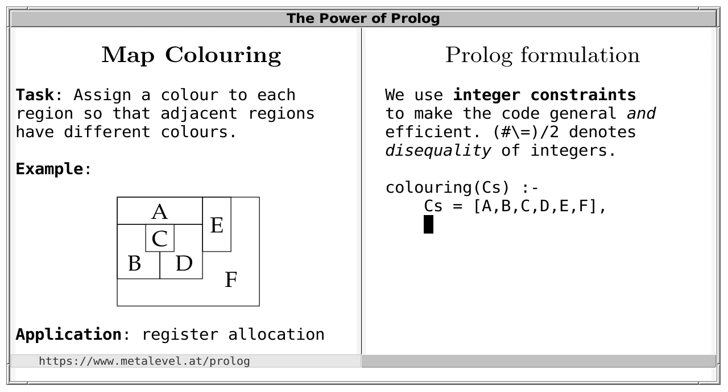Now, what must hold about these elements? Well, what we can say for certain is that A and B must be different, because the regions A and B are adjacent and therefore must have different colors. We can express this using the diff predicate, which is true if its arguments are different. However, using diff doesn't let us benefit from constraint propagation. So, we use the specialized disequality constraint over integers, and this gives us constraint propagation. Let's simply state the disequalities. What else must hold? Of course, A must be different from C, because these regions are also adjacent. Further, A must be different from D, and also A must be different from E.